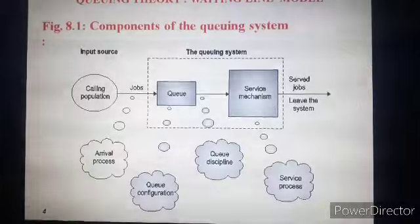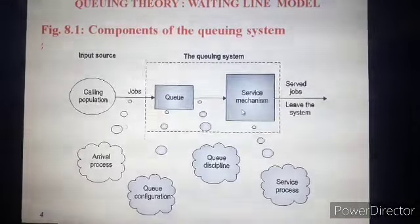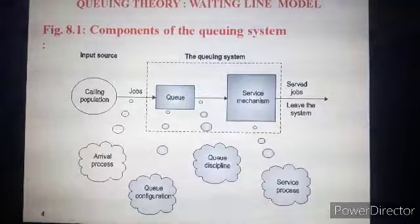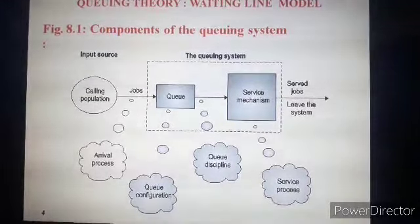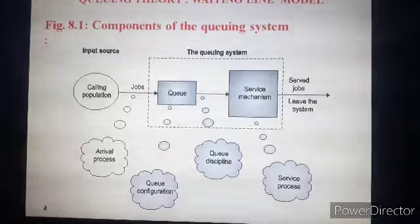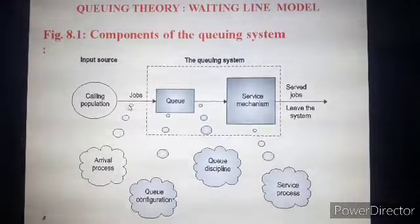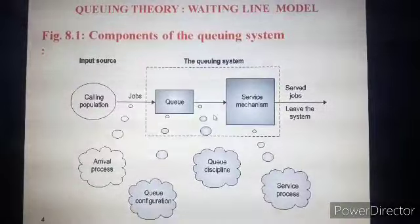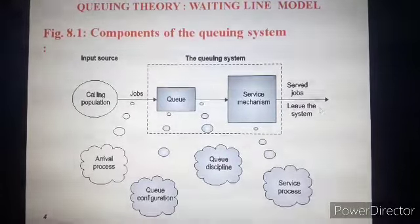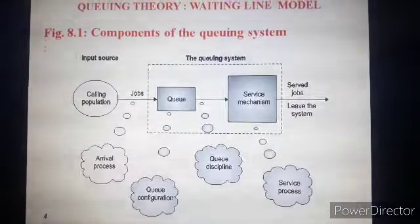To service the customer, we have a single-channel system or a multi-channel system, which we will discuss in detail when studying the different models for solving numericals. How the customer exits the system is also important — we can take feedback from the customer to improve our system. The main objective of this waiting line model is to satisfy each and every customer and provide good service so that customers leave with satisfaction.